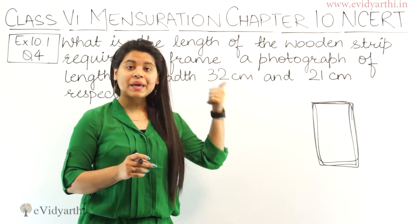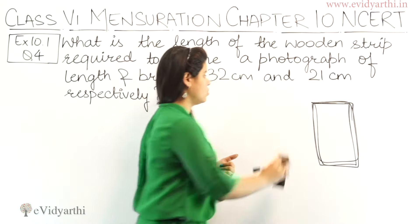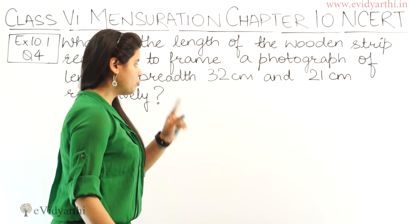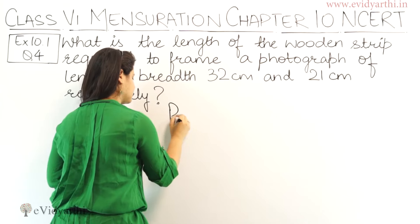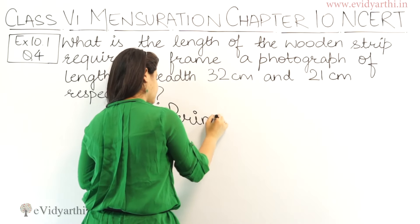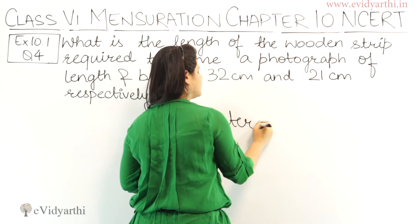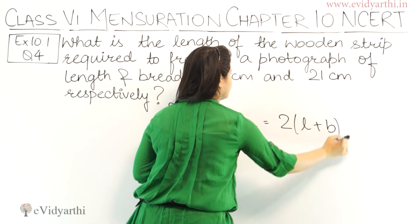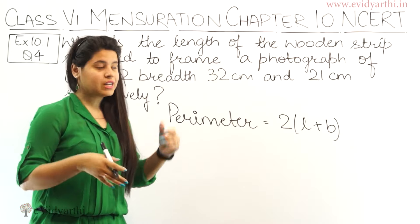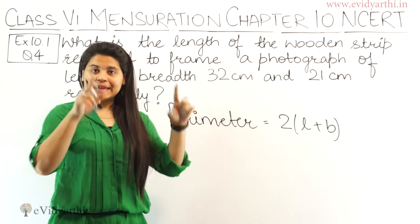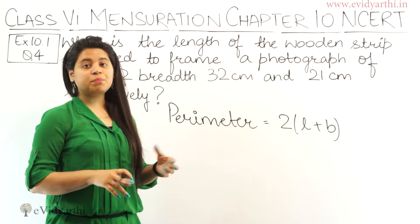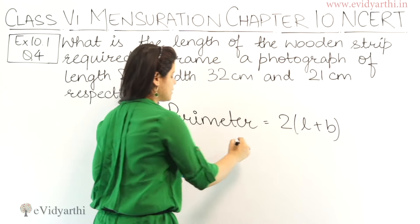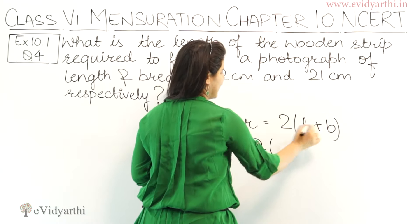So the question is that we find the perimeter. Let's find the perimeter of the photograph. The formula for perimeter is 2(L + B), because length and breadth are given. So it is clear that the photograph is a rectangle shape.